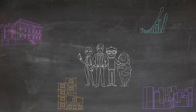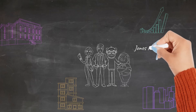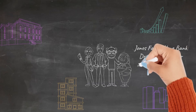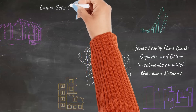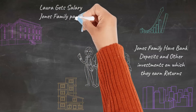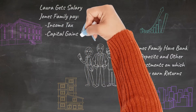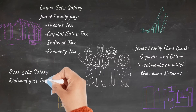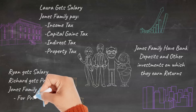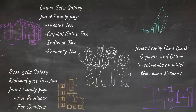The Jones family have bank deposits and other investments on which they earn returns from the financial market. While Laura gets salary from the government for her service in the postal department, the Jones family pays taxes to the government for their house property, income, and gains from investments. Ryan gets salary from the industry sector and Richard gets pension as well. The Jones family consumes products and services provided by the industry and the foreign sector, for which they make monetary payments. And this is how the circular flow of economic activities and income happens in an economy.